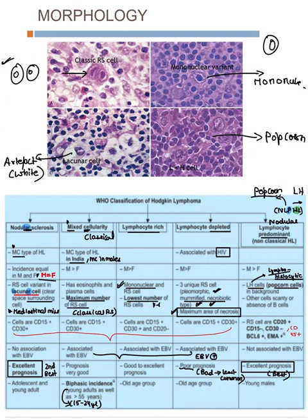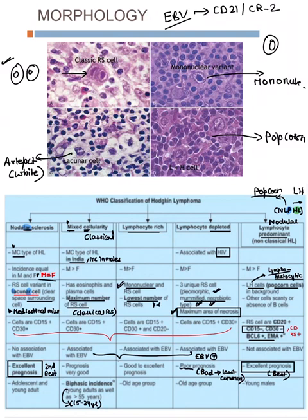The first four subtypes — nodular sclerosis, mixed cellularity, lymphocyte rich, and lymphocyte depleted — are all CD15 and CD30 positive. NLPHL is CD15 and CD30 negative; instead it is CD20, CD45, BCL-6, and EMA positive. Regarding EBV: it acts through receptor CD21 (CR2). The first and last subtypes are not associated with EBV; the next three — mixed cellularity, lymphocyte rich, and lymphocyte depleted — are associated with EBV.